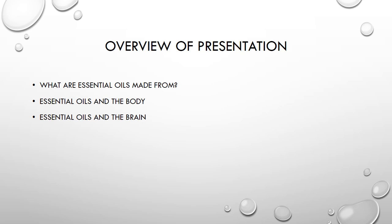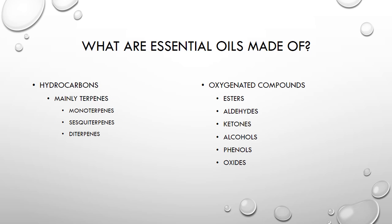This is an overview of what I'm going to go over today: what are essential oils made of, essential oils in the body, and essential oils in the brain. Essential oils are made of two components: hydrocarbons and oxygenated compounds.